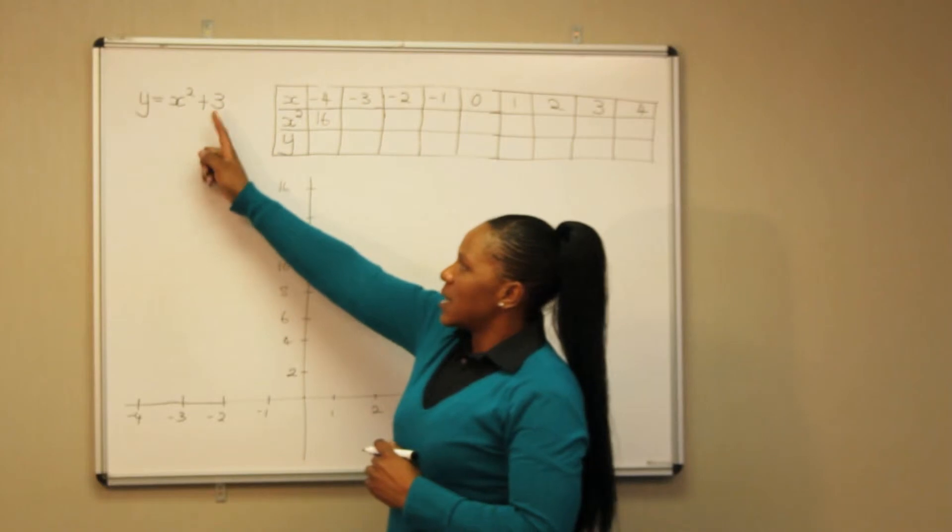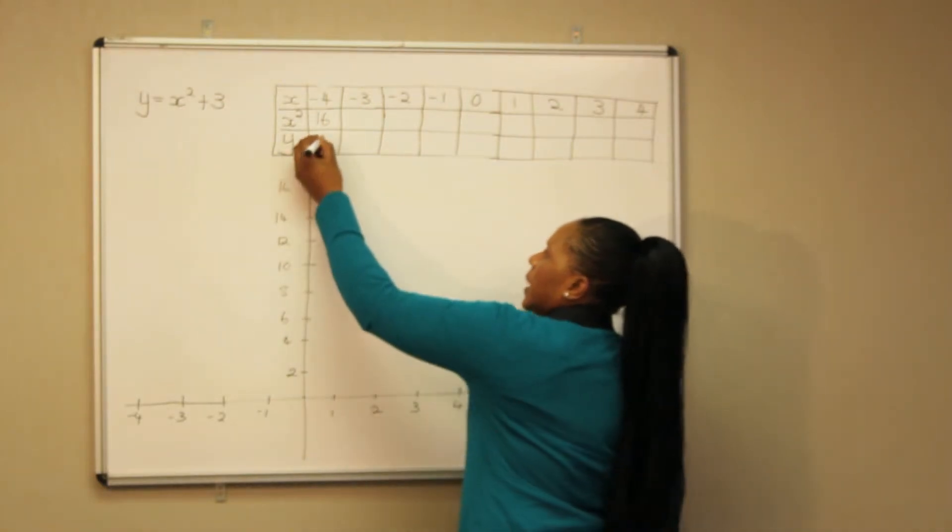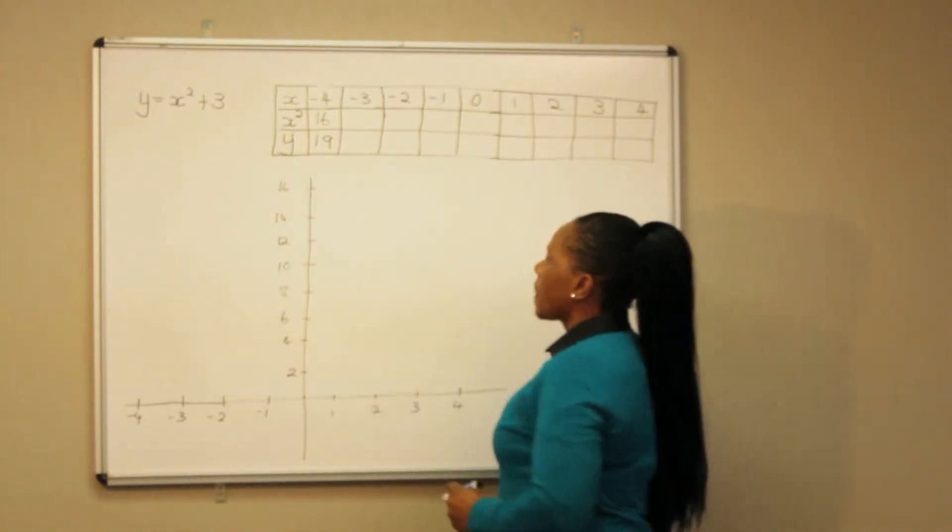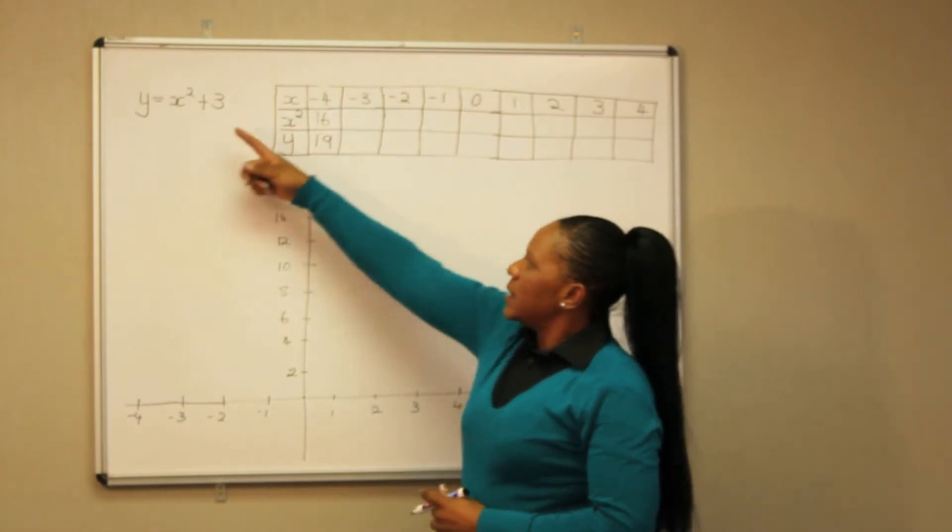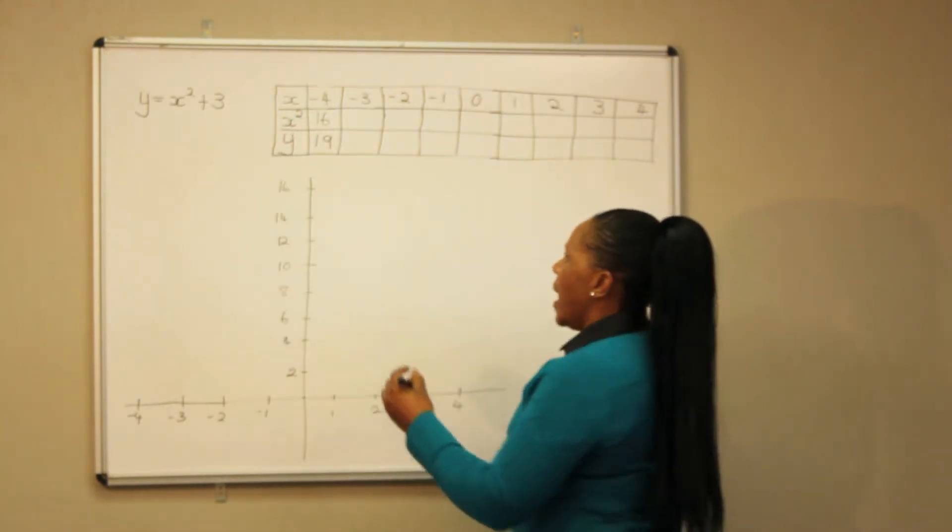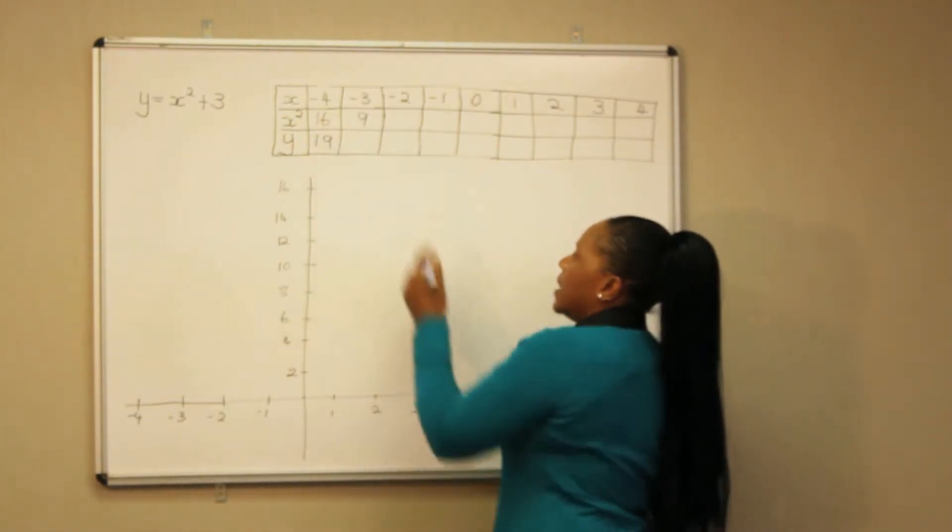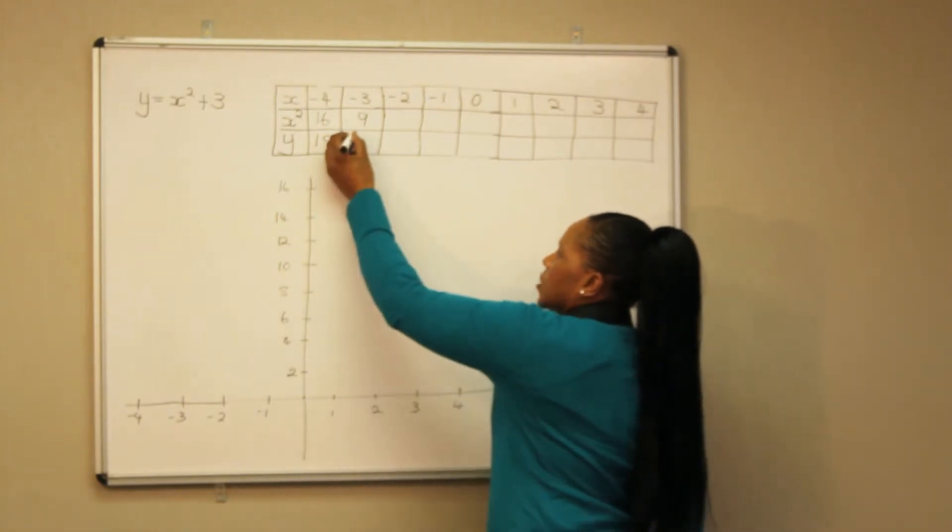So 16 plus 3, we get our y value is 19. Minus 3 squared gives us 9, 9 plus 3 we get 12.